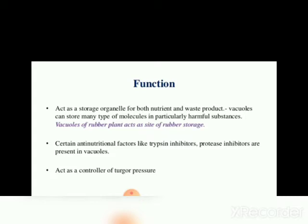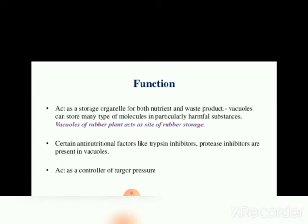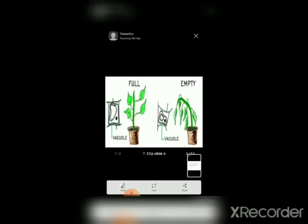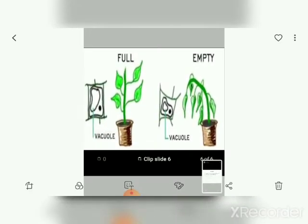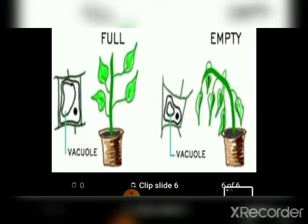Vacuole का मुख्य कार्य आसूनता (turgidity) को बनाए रखना है जो कोशिकाओं को सक्रिय रखने के लिए आवश्यक होती है। Tonoplast पानी का आवागमन vacuole के द्वारा सेल के अंदर करता है। Osmosis के कारण पानी vacuole के अंदर प्रवेश करता है जिससे turgor pressure maintain रहता है। अगर सेल ने पानी loose कर दिया और turgor pressure कम हो गया तो plasmolysis हो जाती है, जैसा कि diagram में देख सकते हैं — पहले turgor pressure के कारण plasmolysis नहीं हो रही थी, लेकिन पानी की कमी से plasmolysis हुई और पौधा मुर्झा गया।